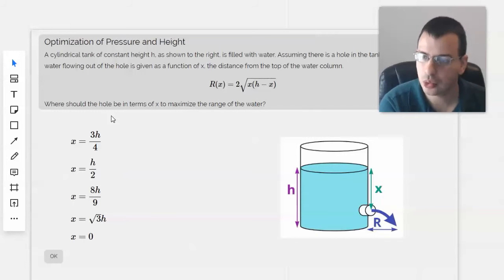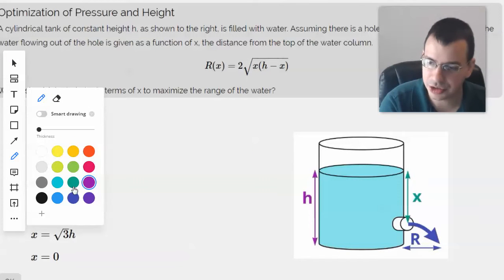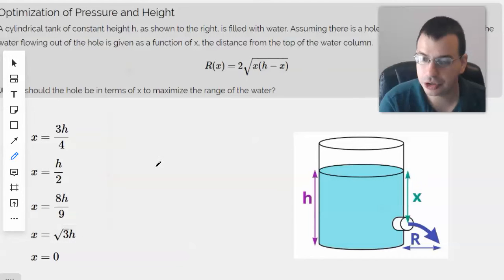Here's an equation. Where should the hole be in terms of x to maximize the range of the water? Well, it's nice that we don't have to rewrite h in terms of x. So basically, we're going to take this equation, ignore everything set up here, take the derivative, set it equal to 0, and just optimize like we always do.